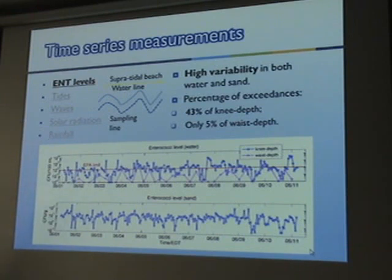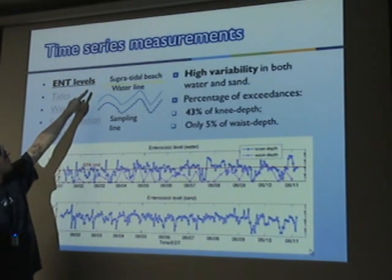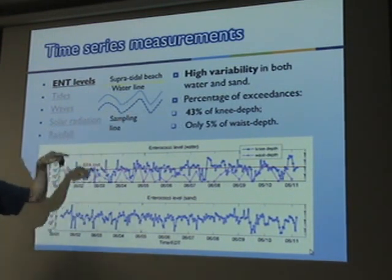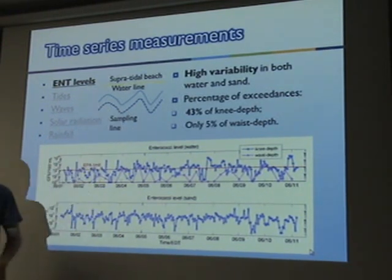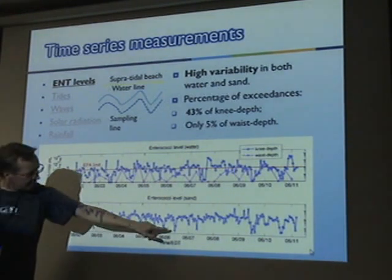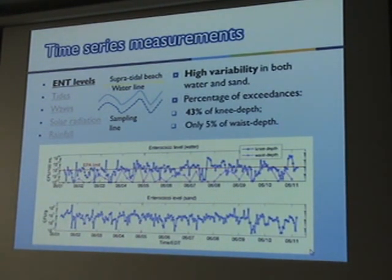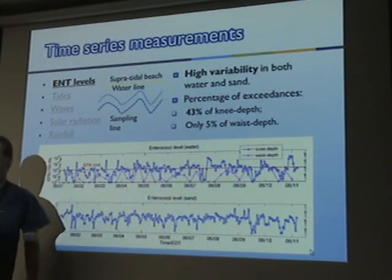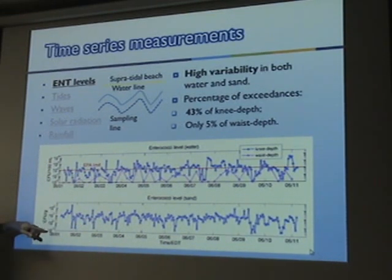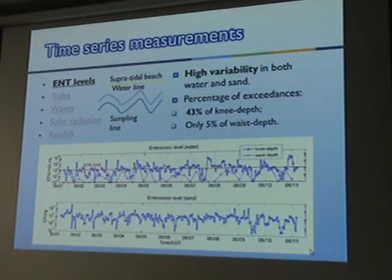Because sampling is done at a given depth, and because of the tide, the sampling location is moving up and down the beach. So you can see that really nicely in the sand samples: the times when levels are low typically correspond to low tide when we were away from the beach, and when we were close to the waterline near the super-tidal beach, we had high levels of enterococci. Part of this signal is explained by the fact that we're not sampling at the same location all the time, but we're moving.